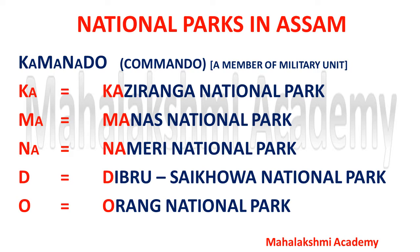Starting with K-A, that is Kaziranga National Park. After that, M-A is Manas National Park. Then N-A is Nameri National Park, followed by D, which is Dibru-Saikhoa National Park. And the last one, O, is Orang National Park. So these are the five national parks situated in Assam.